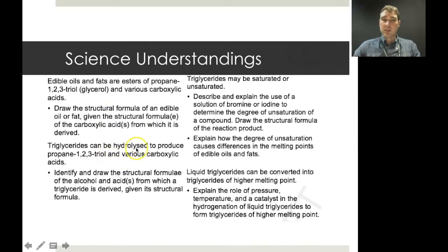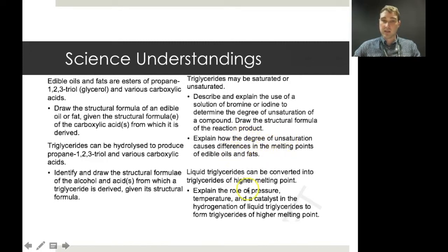Triglycerides can be hydrolyzed to produce propan-1,2,3-triol and various carboxylic acids. Triglycerides may be saturated or unsaturated. We'll describe the use of bromine or iodine solutions to determine the degree of unsaturation, explain how unsaturation causes differences in melting points, and look at how liquid triglycerides can be converted into those of higher melting points — this is margarine production.